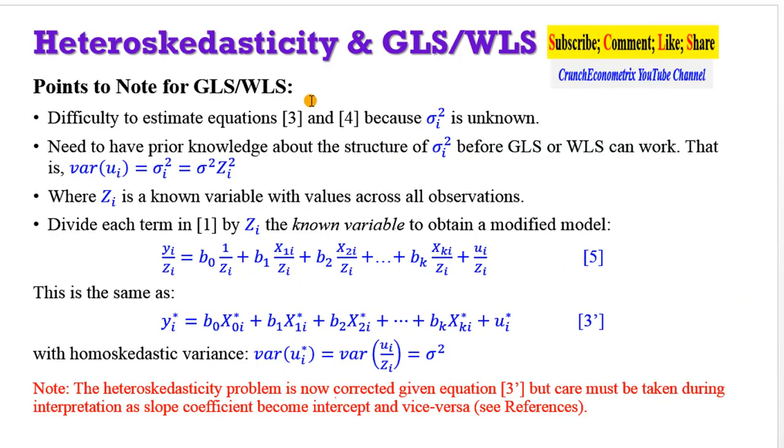But we need to consider some points for the GLS and the WLS. There will be a difficulty to estimate equations 3 and 4 because the structure of the variance, the heteroskedastic variance, is unknown. So it is important to have a prior knowledge about the structure of this heteroskedastic variance before both approaches or either approach can work. In this instance, we are going to reconstruct the variance and multiply it by a known variable. This known variable is expected to have values across all observations, talking about an independent variable.